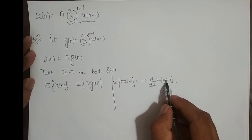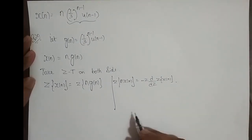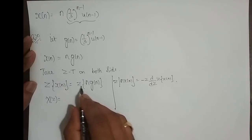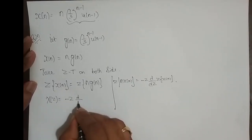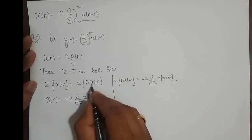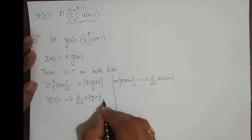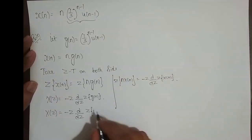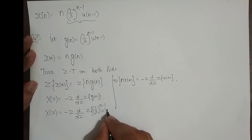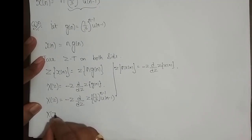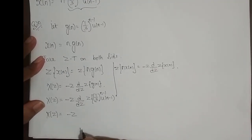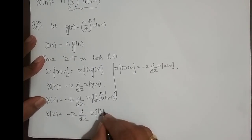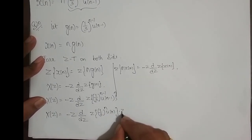It is basically minus z into d by dz of X of z, where X of z is the Z-transform of x of n. If I apply this property here, Z-transform of x of n is X of z, equal to Z-transform of n into g of n. So it is minus z into d by dz of Z-transform of g of n, which is 1 by 3 power n minus 1, u of n minus 1. So X of z equals minus z into d by dz of Z-transform of 1 by 3 power n, u of n, into z power minus 1.